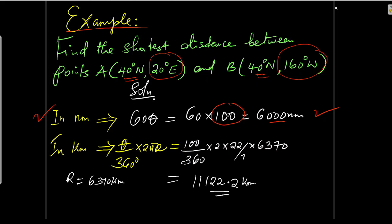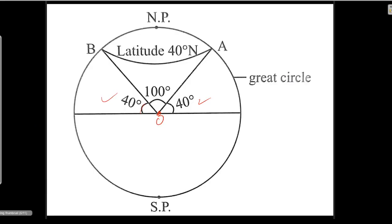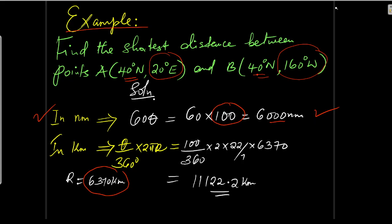How do you get the distance along the great circle in kilometers? The formula is θ/360 × 2πr, where r is the radius of the earth, given as 6,370 kilometers, and theta is the longitude difference — which we established as 100 degrees. So it will be 100/360 × 2πr, and that gives 11,122.2 kilometers. That is how you get the shortest distance along the great circle both in nautical miles and in kilometers.